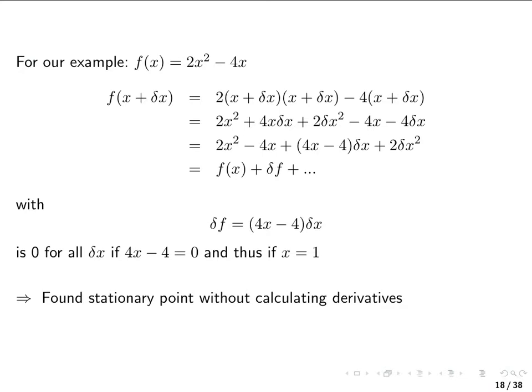Let's go back to our example and try this. We evaluate f(x + δx) by inserting x + δx wherever x appears, giving us 2(x + δx)² - 4(x + δx). Expanding the parentheses and collecting terms, we recover our original function plus a first or linear variation term, plus higher-order variation terms.